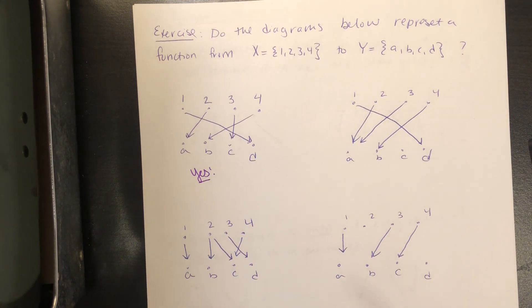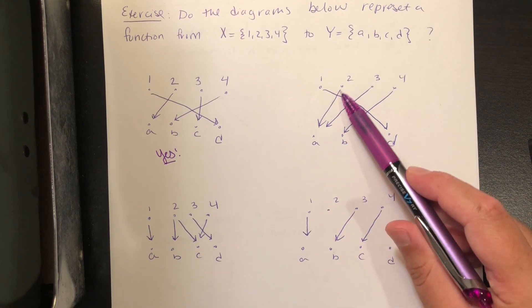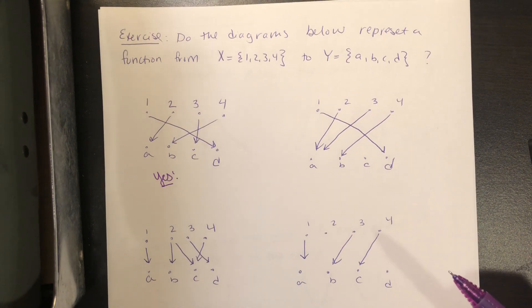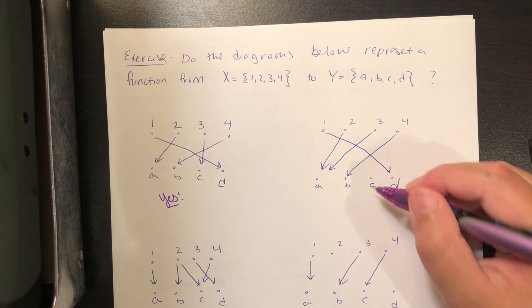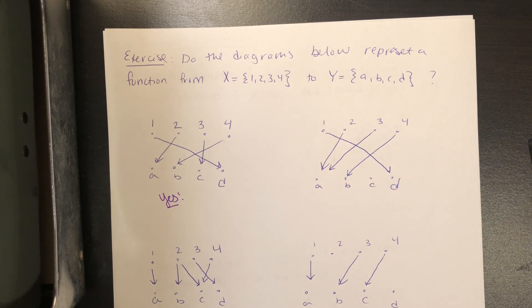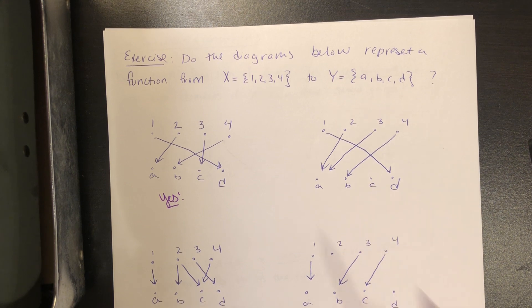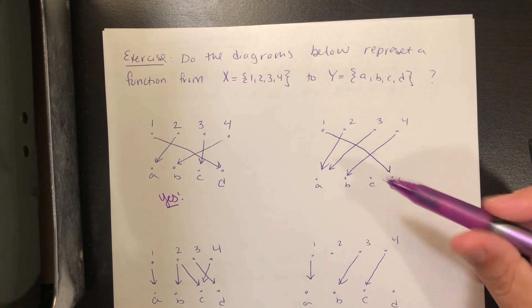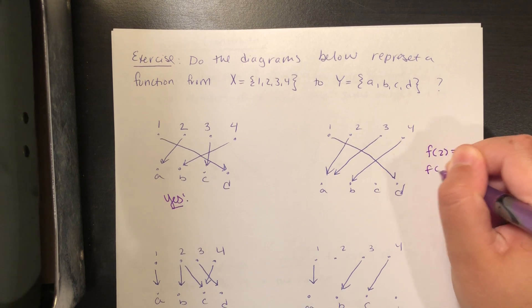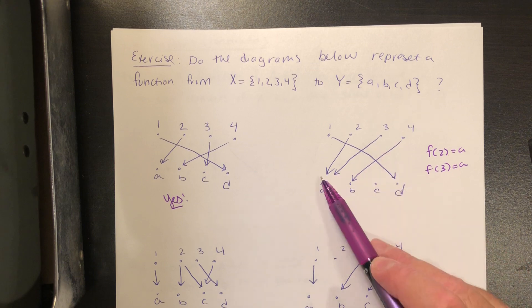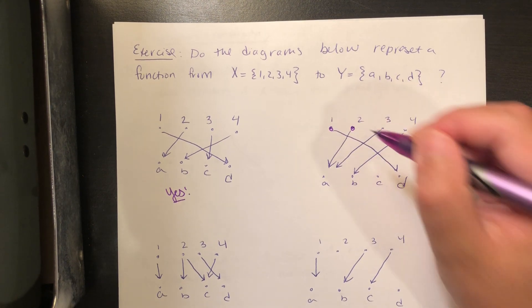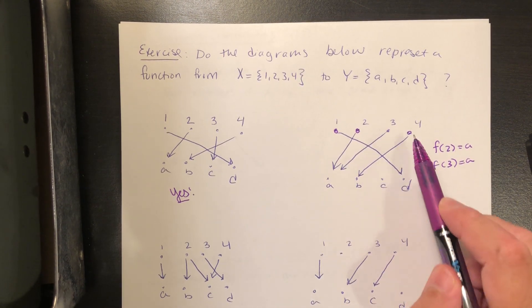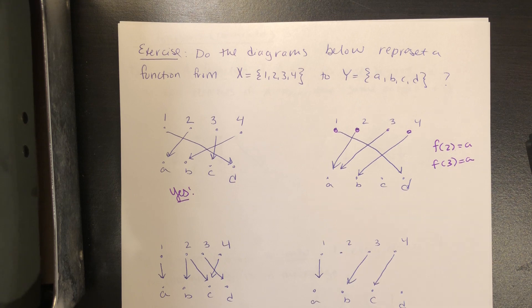In the second diagram, 1 goes to D, 2 goes to A, 3 goes to A, 4 goes to B. This is fine. It might seem like a problem that C doesn't get mapped to by anything, but we've seen before that's okay — like the function from the natural numbers to the integers that left out a whole bunch of things from the range. You're also allowed to have two different elements of the domain mapping to the same element of the co-domain. The only problem would be two different arrows coming out of the same element. As long as each element of the domain has exactly one arrow coming out of it, it's a function. So this is also yes.